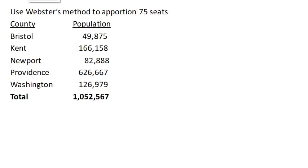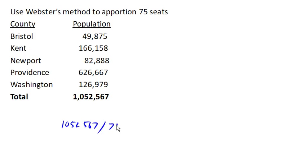Using Webster's method in Rhode Island, we start with the standard divisor from before — calculated by dividing the total population by the number of seats. Our initial divisor is 1434, and that lets us find our quotas.